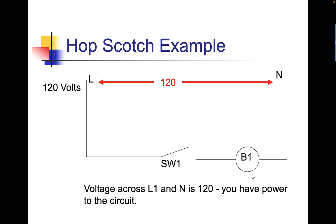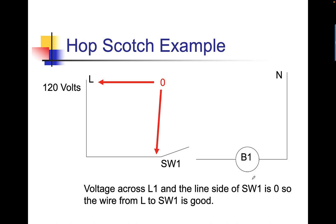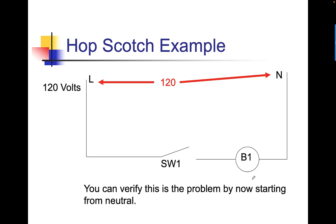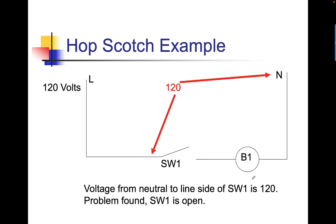In this example, we're testing voltage across L1 and L2 — it's 120 volts, so we have power to the circuit. Voltage between L1 and the line side of switch one is zero, so that wire is good. Voltage across L1 and the load side of SW1 is 120 — switch one is open. Remember, voltage across an open switch is always source. We can verify that by starting from neutral and working backwards to the switch — we come across switch one again and it's 120. You might think you can just look and see the switch is open — no, you can't. It's inside a container, a piece of metal or plastic, so you won't be able to see if that switch is actually open or closed. Problem found: switch one is open.